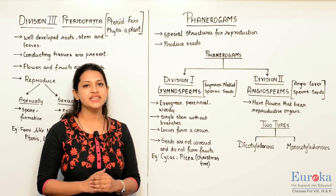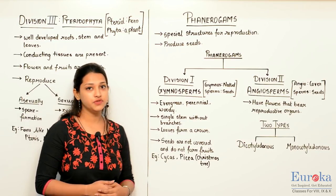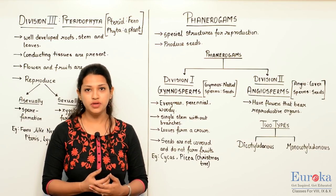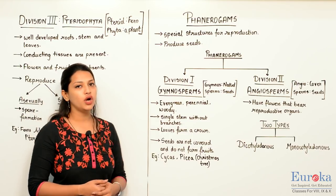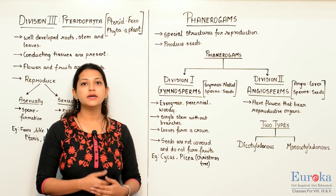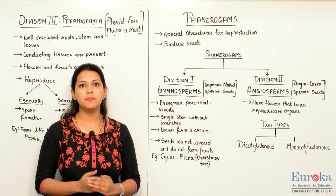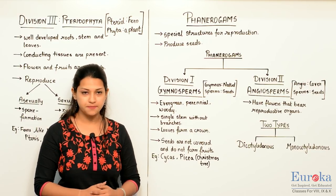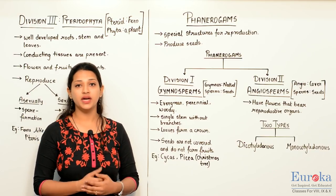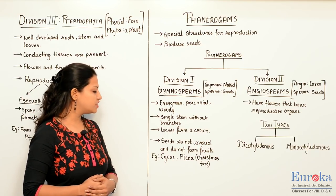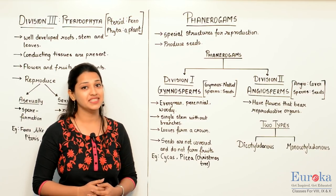Gymnosperms have a single stem without any branches. They have leaves which form a crown. Their seeds are not covered. The male and female flowers are on the same plant but on different sporophylls. They do not form fruits as their seeds are not covered. Examples of gymnosperms are Cycas and Picea, which is a Christmas tree.